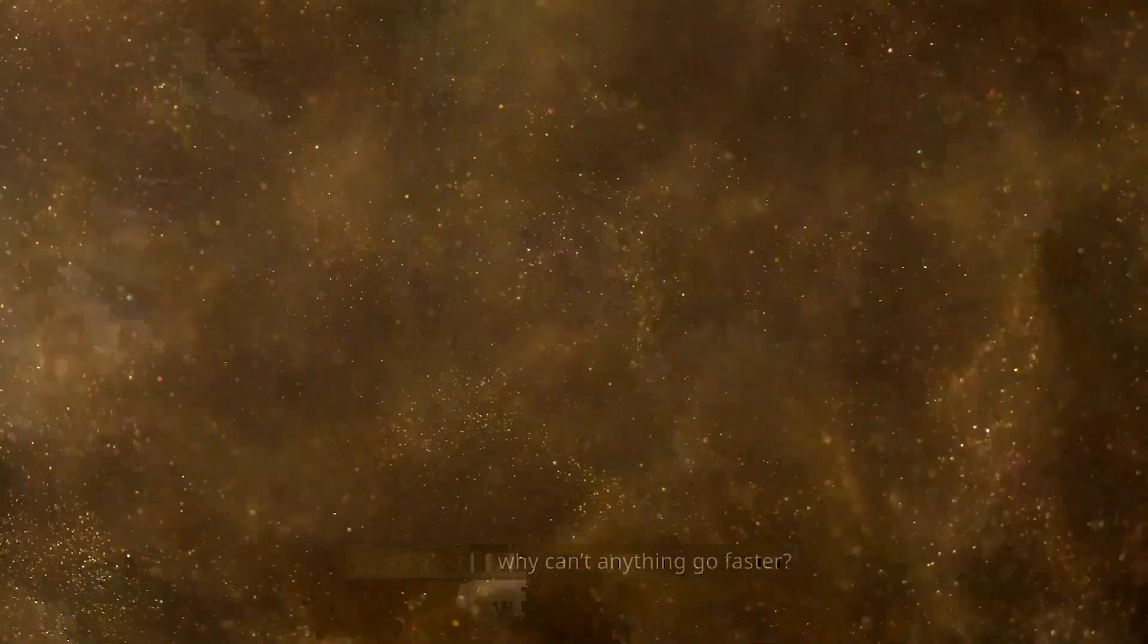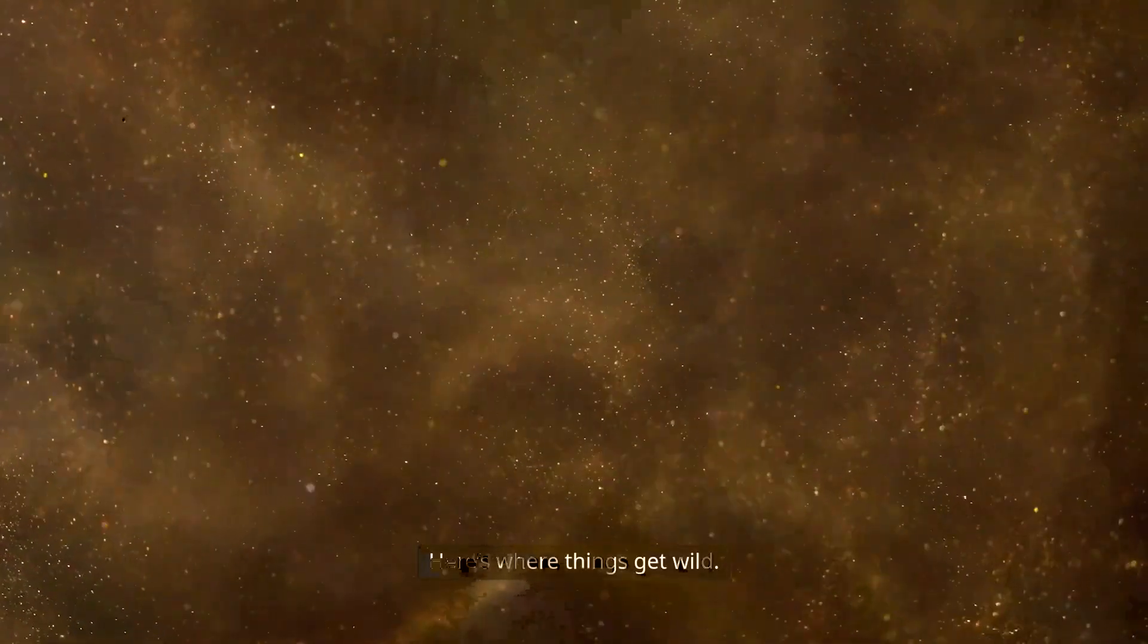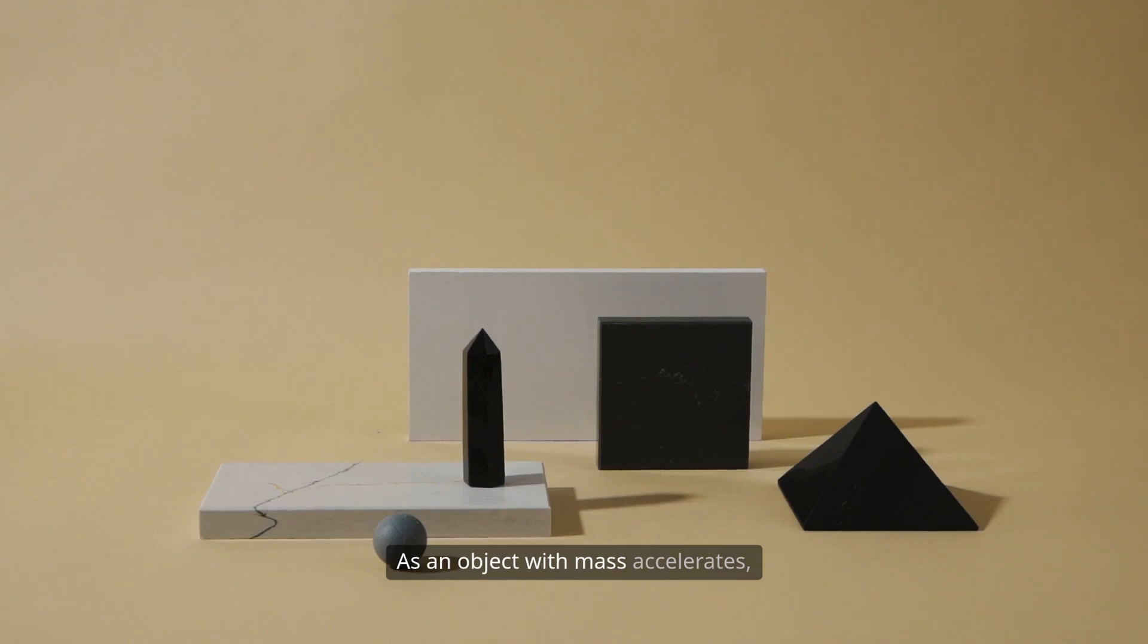Now let's look at why can't anything go faster? Here's where things get wild. As an object with mass accelerates, it gains kinetic energy. But it also starts to gain relativistic mass.